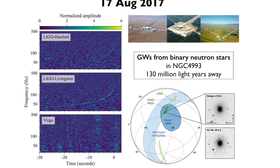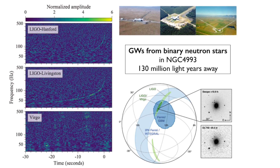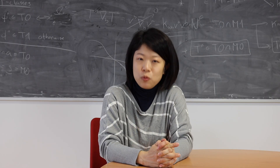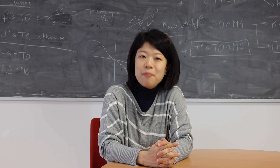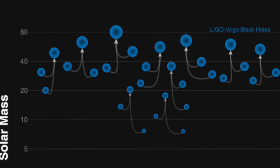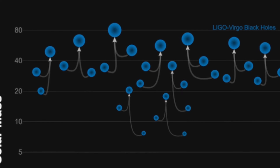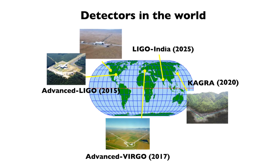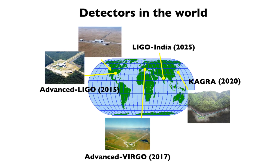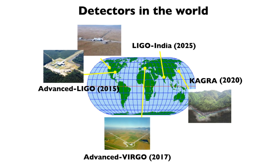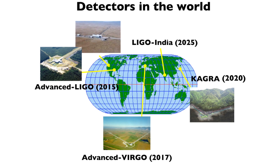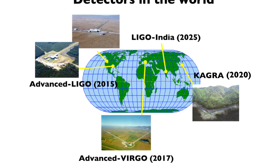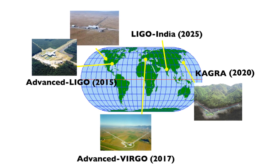Furthermore, in 2017, LIGO and the European detector Virgo detected gravitational waves from a neutron star binary. They also announced the detection of 10 binary black hole events so far. They are now running the third observation with upgraded sensitivities, and in addition, the Japanese gravitational wave detector KAGRA will join the international detector network soon.